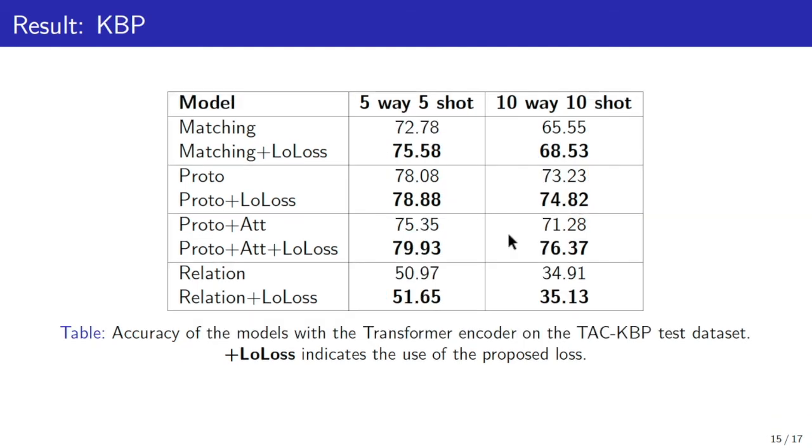This is another result table on TAC-KBP dataset with transformer encoder. In this experiment, we managed to run it on 5-way 5-shot and 10-way 10-shot only because the number of experiments is very high. We can also see the same significant improvement on all few-shot learning base models using the additional loss functions.